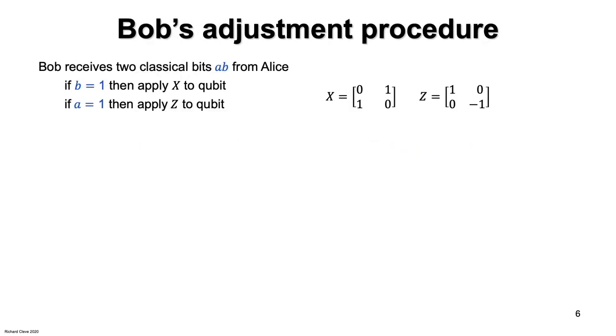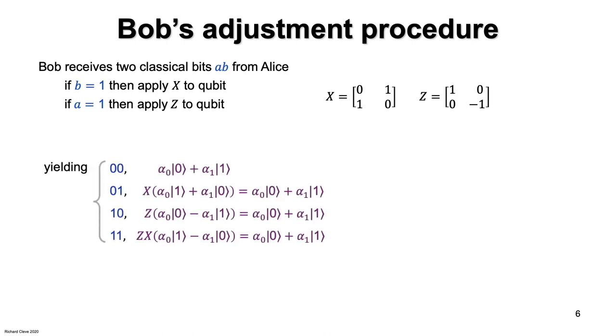And just to be more detailed about what Bob does, he's got to do the appropriate correction. So he receives two classical bits from Alice, A and B, and B indicates whether Bob should apply a Pauli X and A indicates whether Bob should apply a Pauli Z. And if you apply the operations in the four cases, you see that it's always the appropriate correction. So Bob obtains the correct state in all four cases.